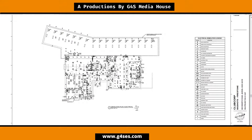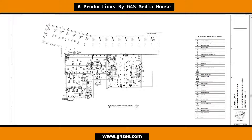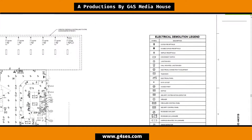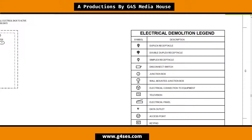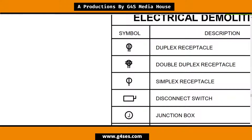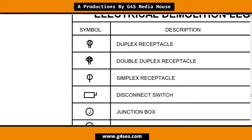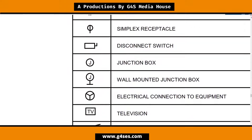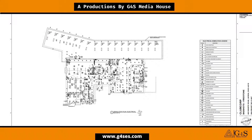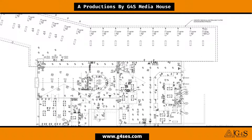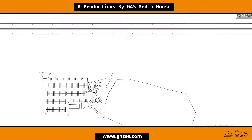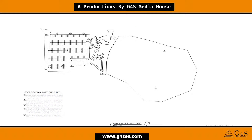This is the first electrical drawing — it is for the demolition being carried out at the first floor. On the right side, there is an electrical legend. This legend represents different symbols and tells their descriptions. For example, the first symbol is for a duplex receptacle, the second is for a double duplex receptacle, the third is for a simple receptacle, and the fourth is for a disk net switch. We will learn about these symbols more in the upcoming tutorials when we upload these drawings on PlanSwift. For now, we are just going through the drawings and becoming familiar with the symbols and the type of work being carried out.